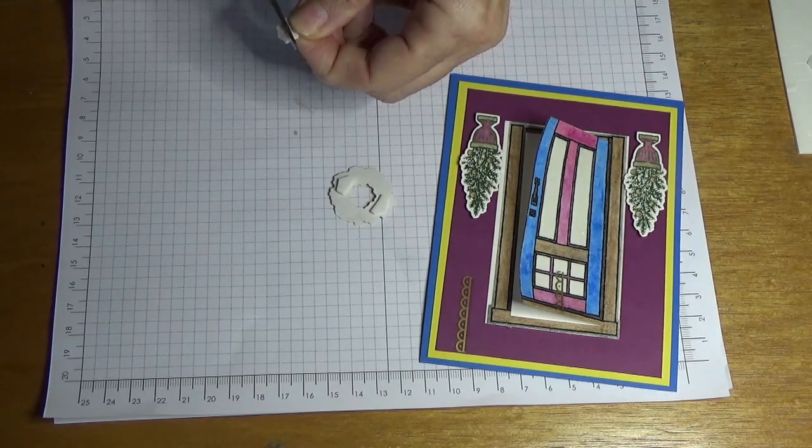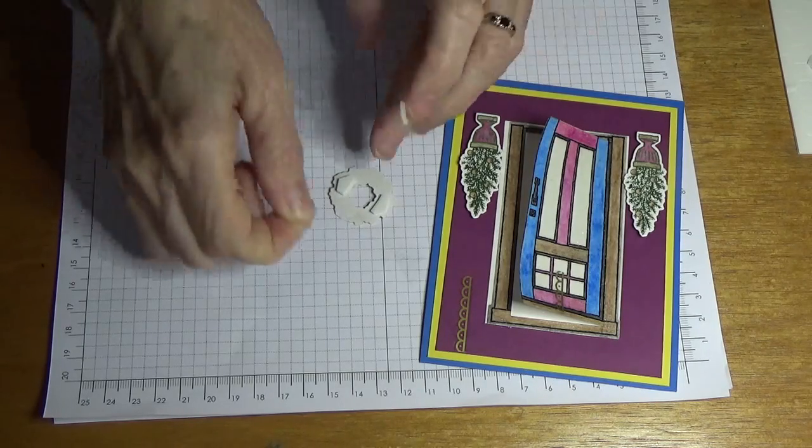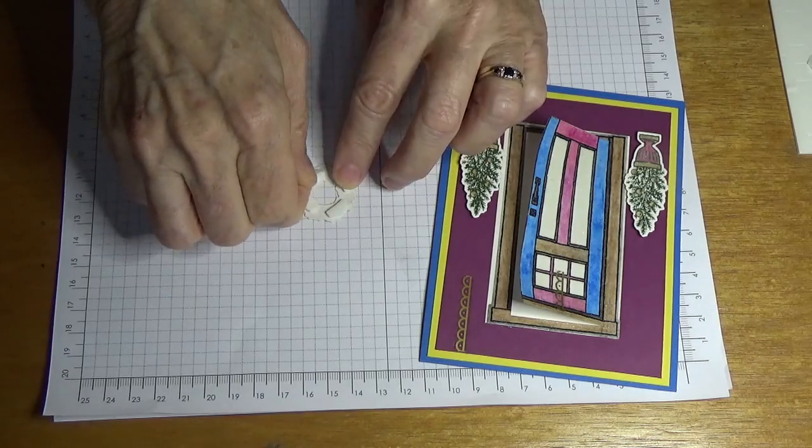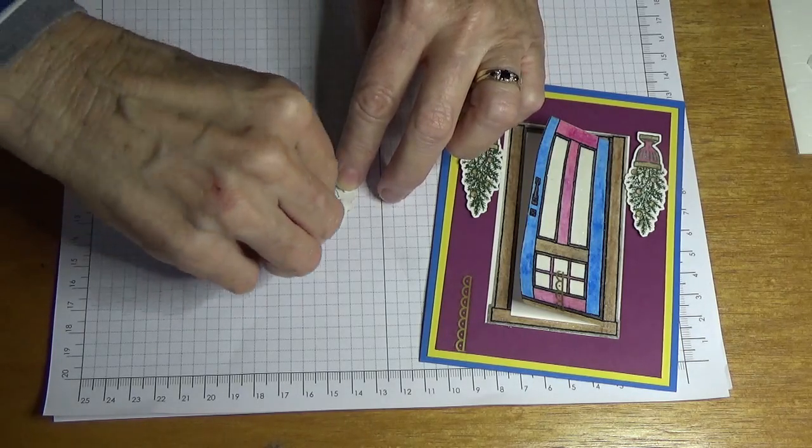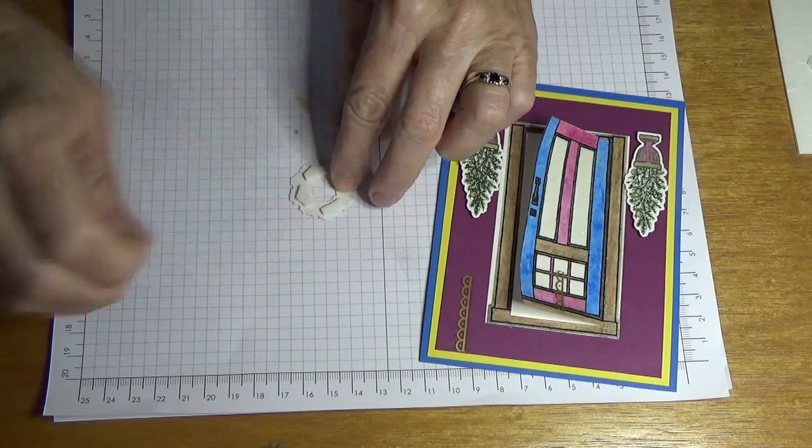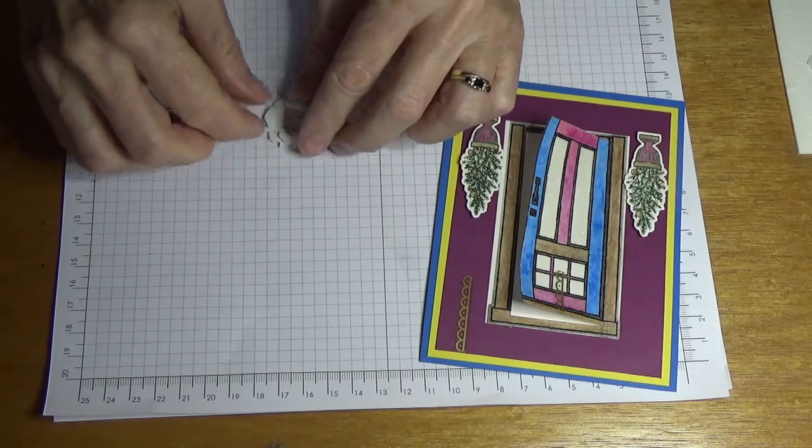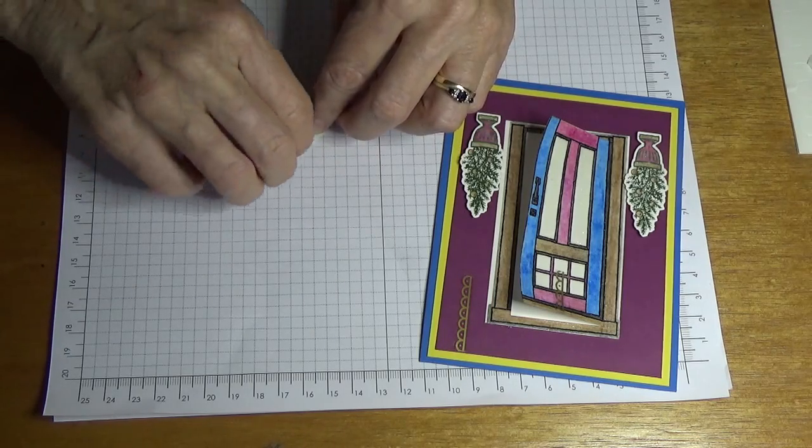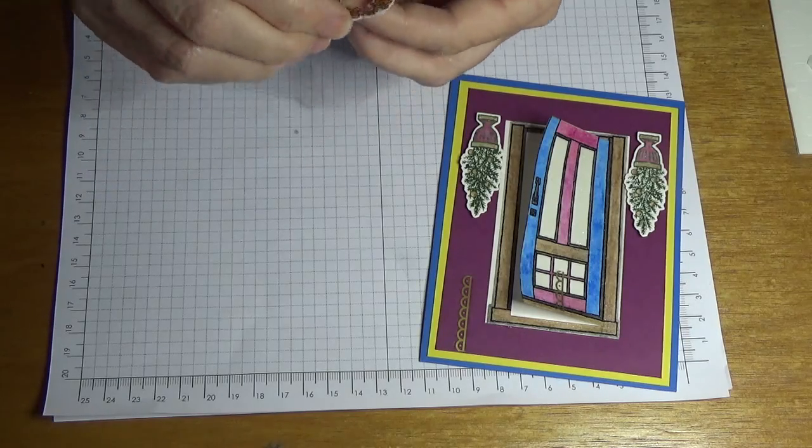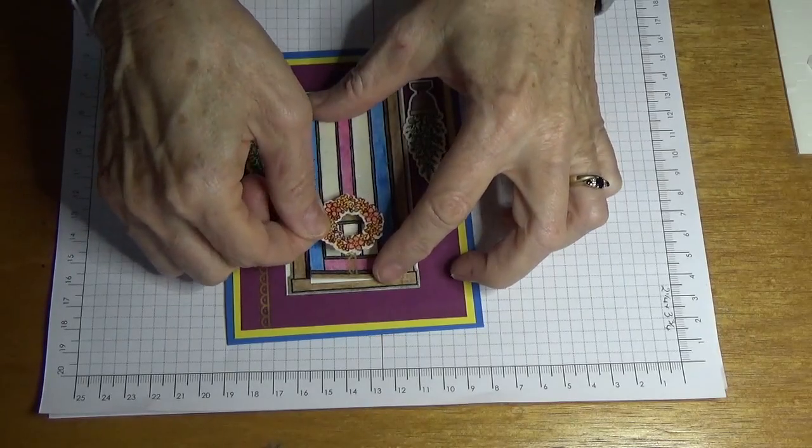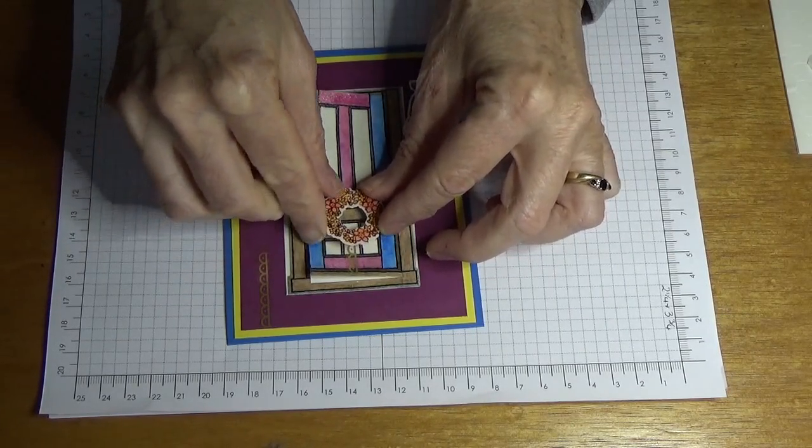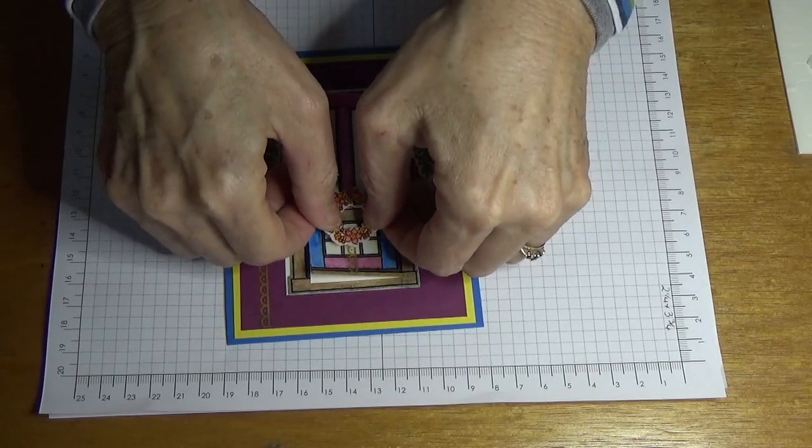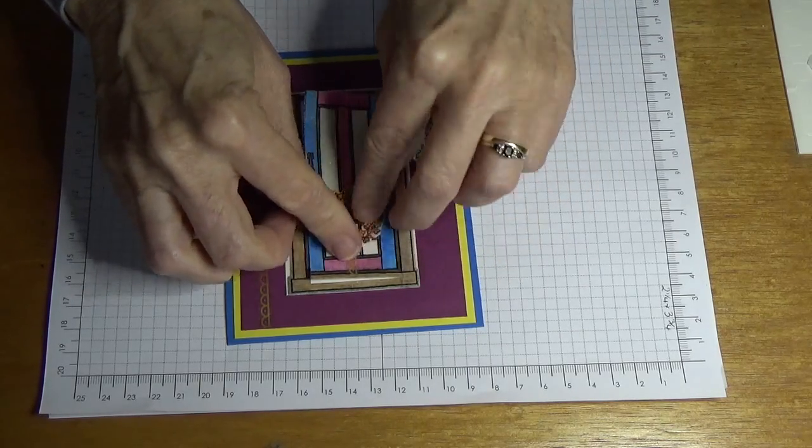And then just put that on the side. Just taking off the backing. Just one more. And then I'm just going to put it on about there. The backing didn't quite come off, so I'm just going to put it on there like that.